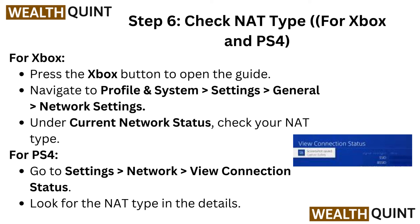Step 6: Check NAT type for Xbox and PS4. For Xbox, press the Xbox button to open the guide. Navigate to Profile and System, then Settings, then General, then go to Network Settings. Under current network status, check your NAT type. For PS4, go to Settings, then Network, then go to View Connection Status. Look for the NAT type in the details.